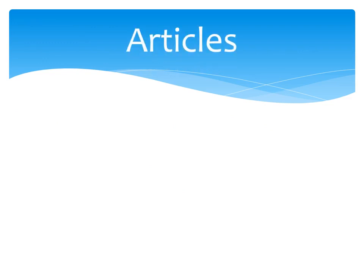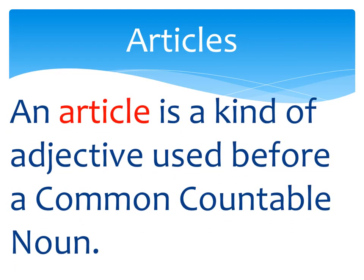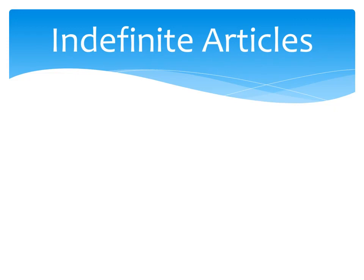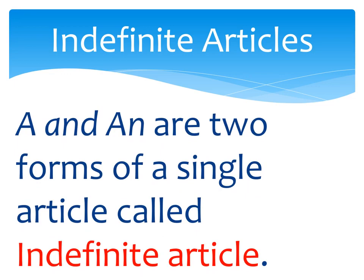This is Lesson 5 of Grammar. First of all, before we begin, I would like to tell you what articles are. An article is a kind of adjective used before a common countable noun. There are two types of articles — one is definite and the other is indefinite. We are going to start with indefinite articles. A and An are two forms of a single article called the indefinite article.